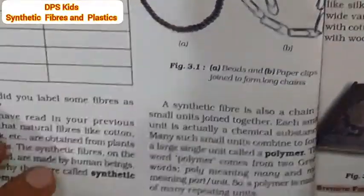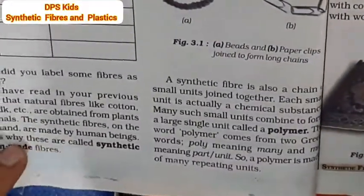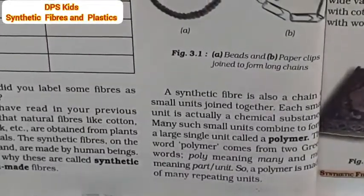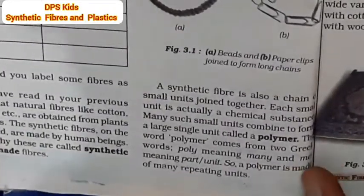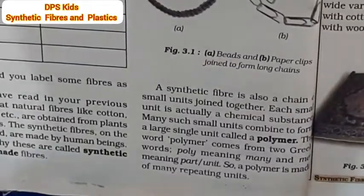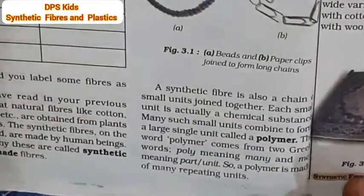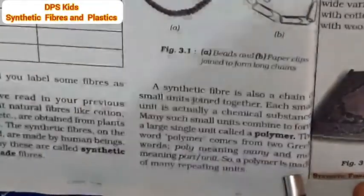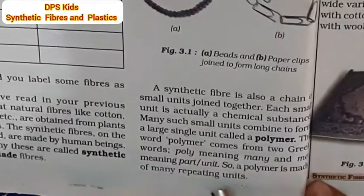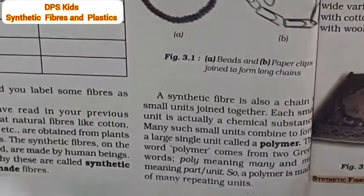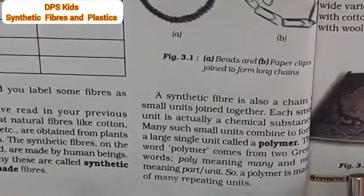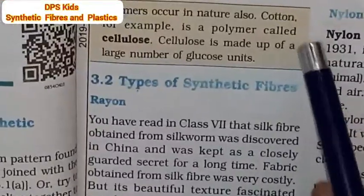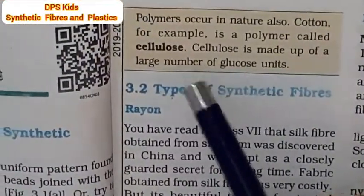Many small units combine to form a large single unit called a polymer. The word polymer comes from two Greek words: 'poly' meaning many, and 'mer' meaning part. Polymers also occur in nature — for example, cotton is a natural polymer.